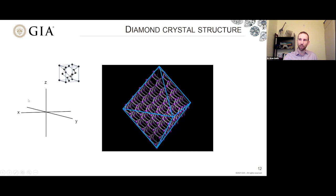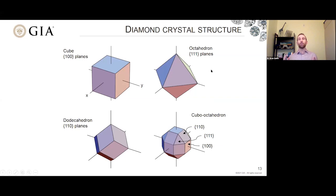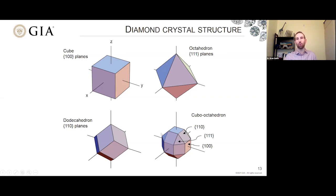Within this coordinate system, we can describe some other planes we sometimes see in diamond crystals. The octahedron is bounded by 1-1-1 planes. Sometimes we also see forms that look like cubes, bounded by 1-0-0 planes. We also have dodecahedral planes described as 1-1-0. And sometimes we see combinations of these most important planes — something we'd call a cubo-octahedron, or cube octahedron, depending on who you ask.